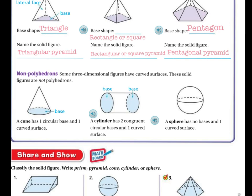Non-polyhedrals. So some three-dimensional figures have curved surfaces. These solids are non-polyhedrons. For example, a cone has one circular base and one curved surface. A cylinder has two congruent circular bases and one curved surface. And then a sphere has no base, but it has a curved surface.